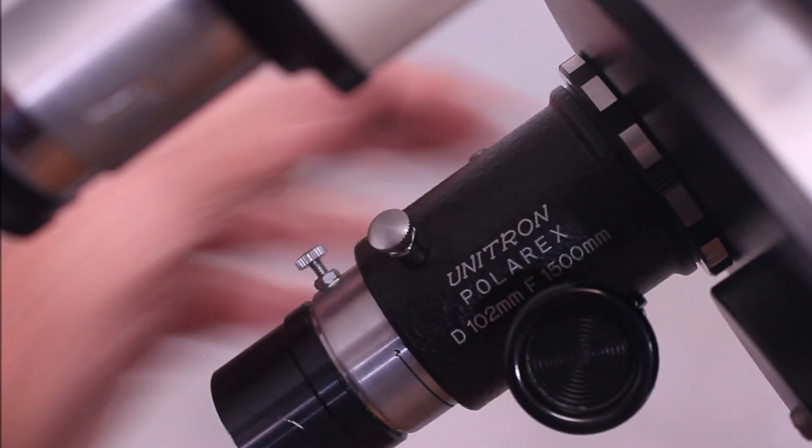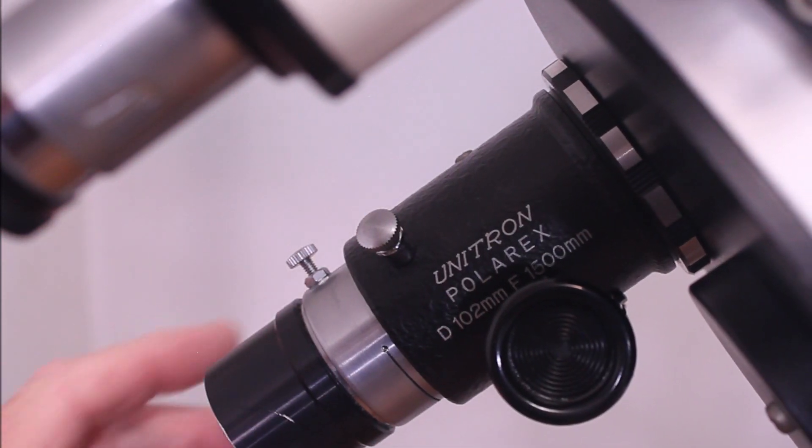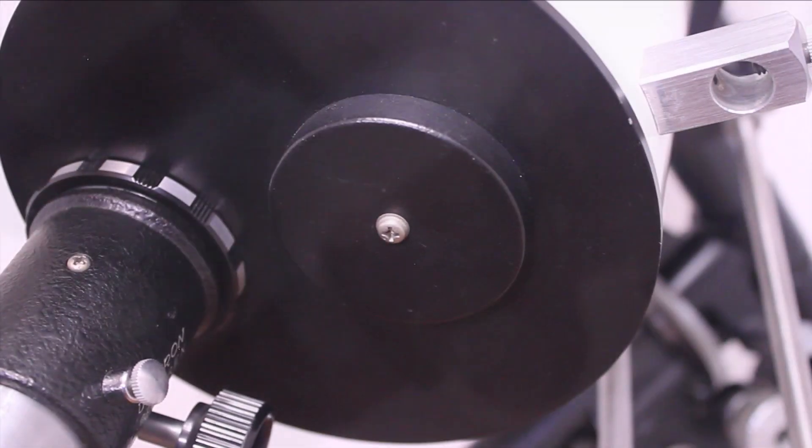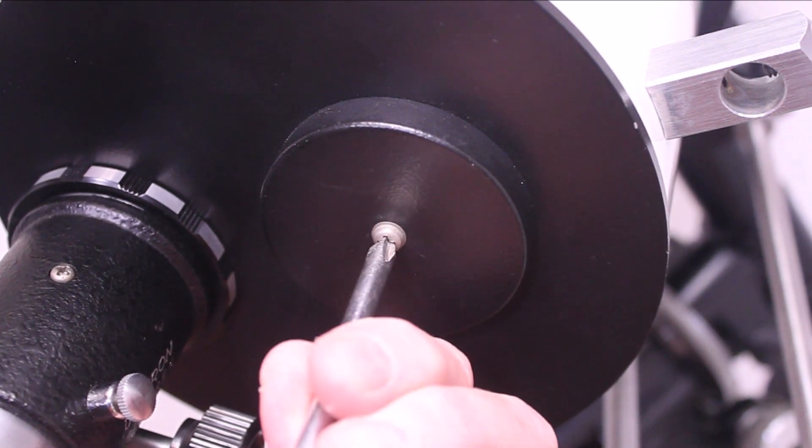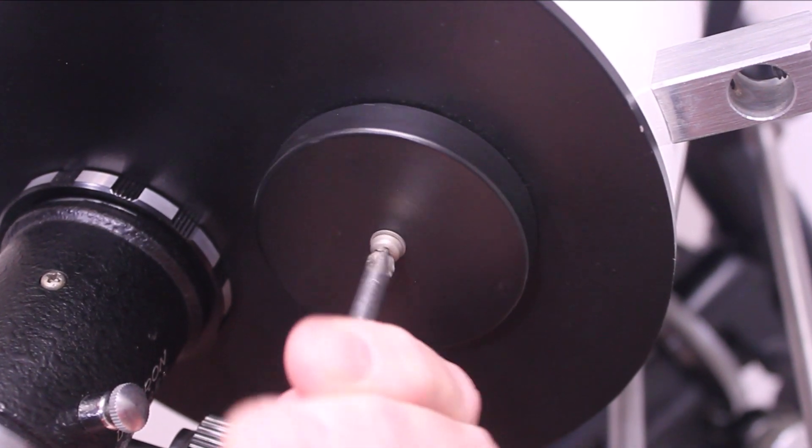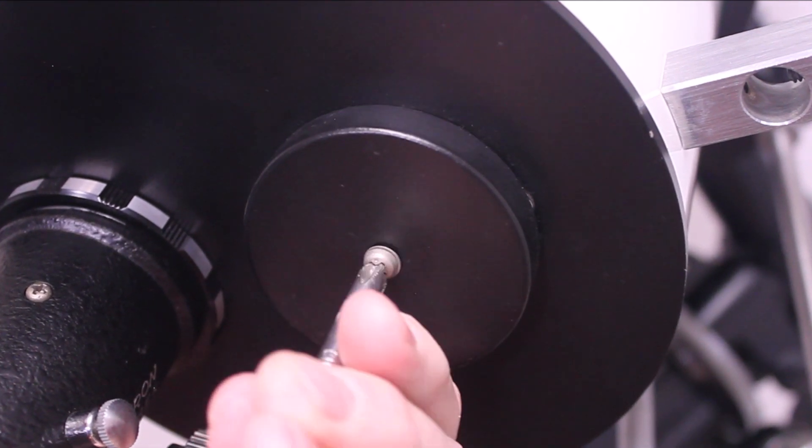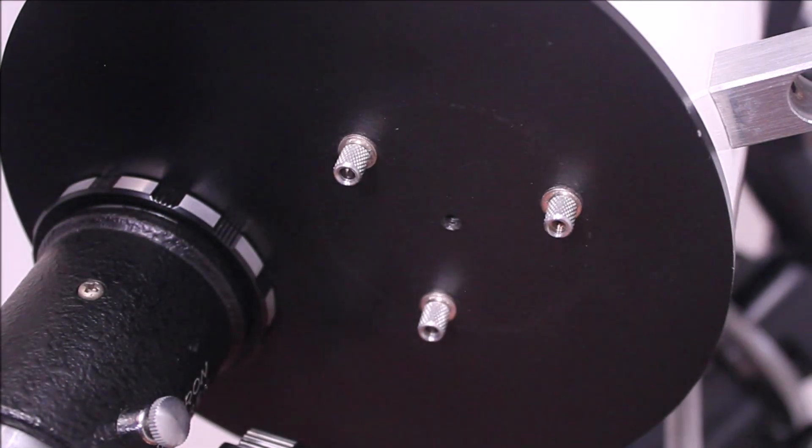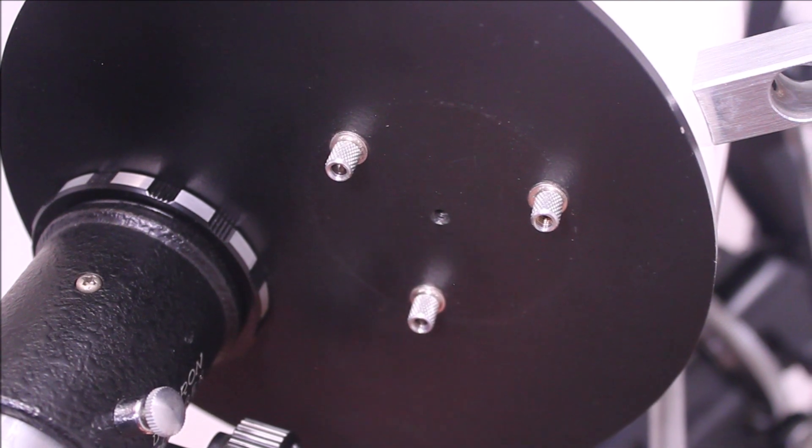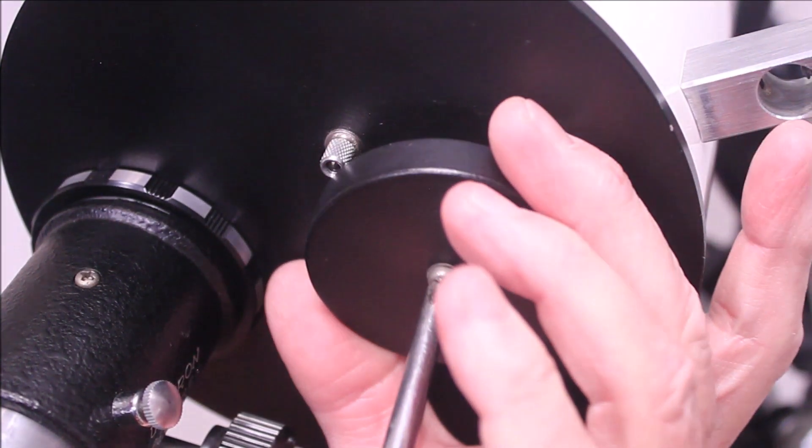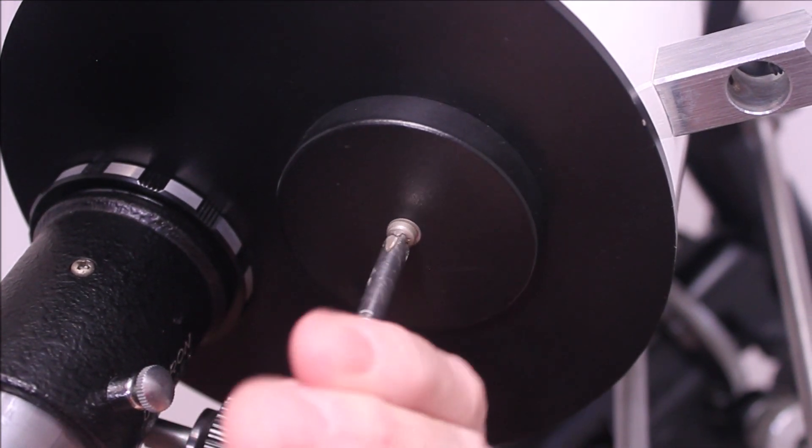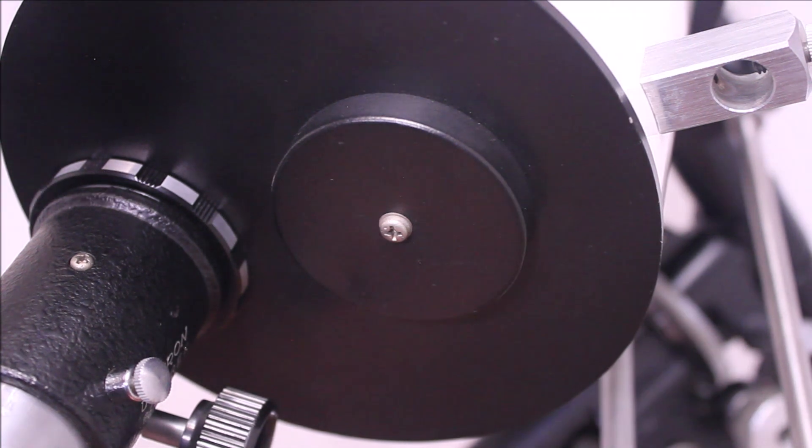You can see the markings on the focuser. Unitron Polarex D102 F1500. Let's pull off this back plate and take a look. Back plate is just a simple screw holding that on. Here are the three adjustment knobs and you could turn these to adjust this to orient the lens. This one is perfect the way it is so I'm not going to touch it. Although it's not hard to do that. It's not as complicated as people think it's going to be.